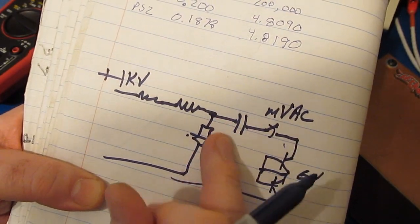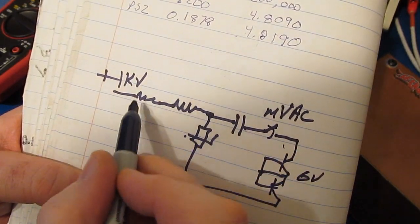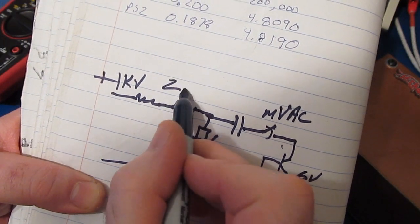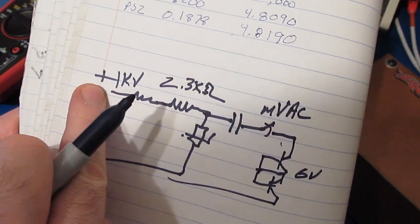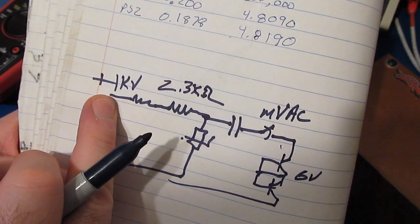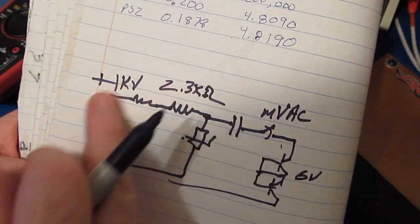And essentially we end up with this capacitor in series with, I don't know, 2.3k ohm resistor. And the question is, is there enough energy here that this could actually damage another instrument?